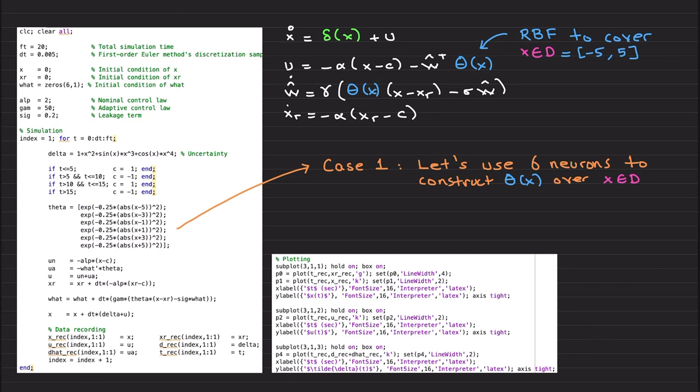Alright, now nominal controller, adaptive controller, more precisely neuroadaptive controller. This is the reference model, this is the w hat discretized version, and this is the uncertainty. Data recording and plotting purposes - I am not diving into data recording and plotting, you can take a screenshot and implement for your own needs.